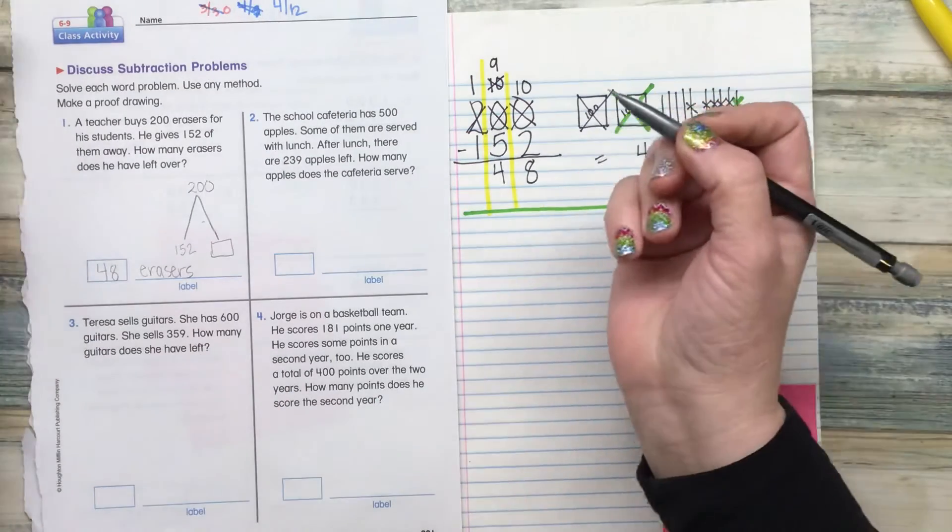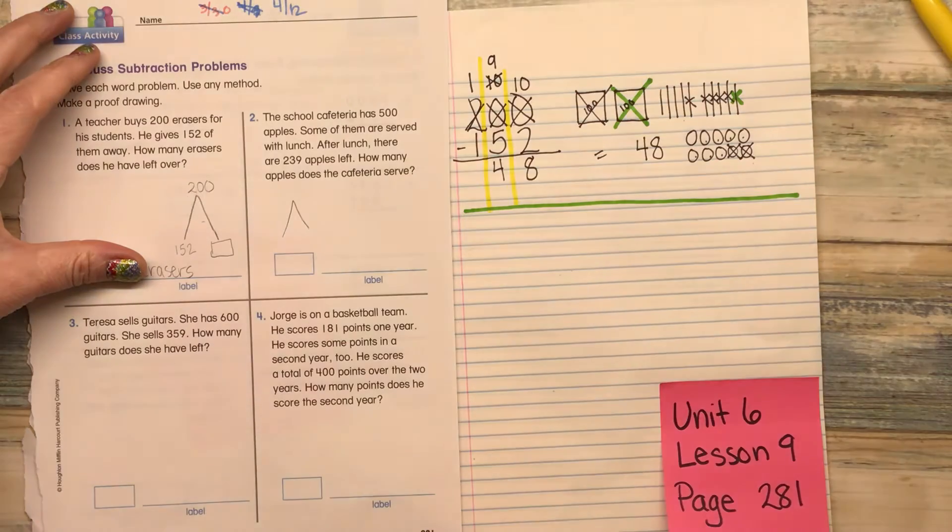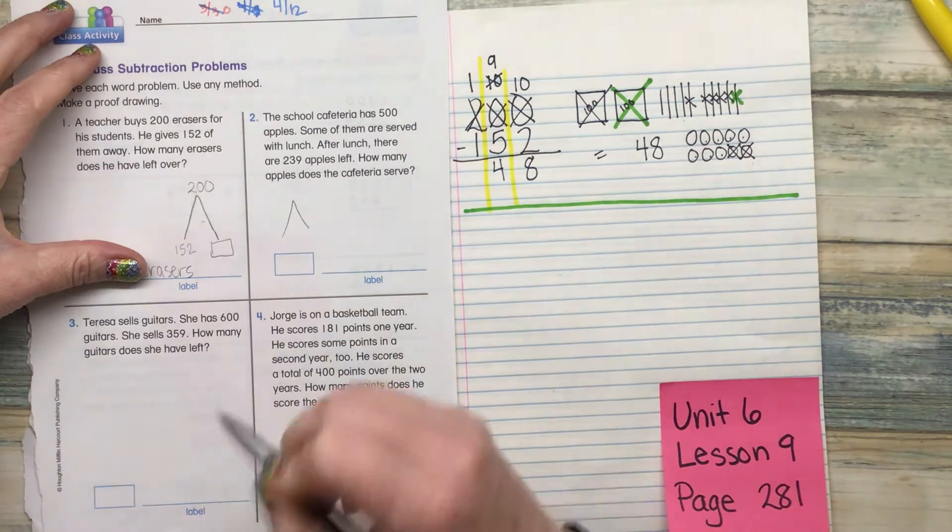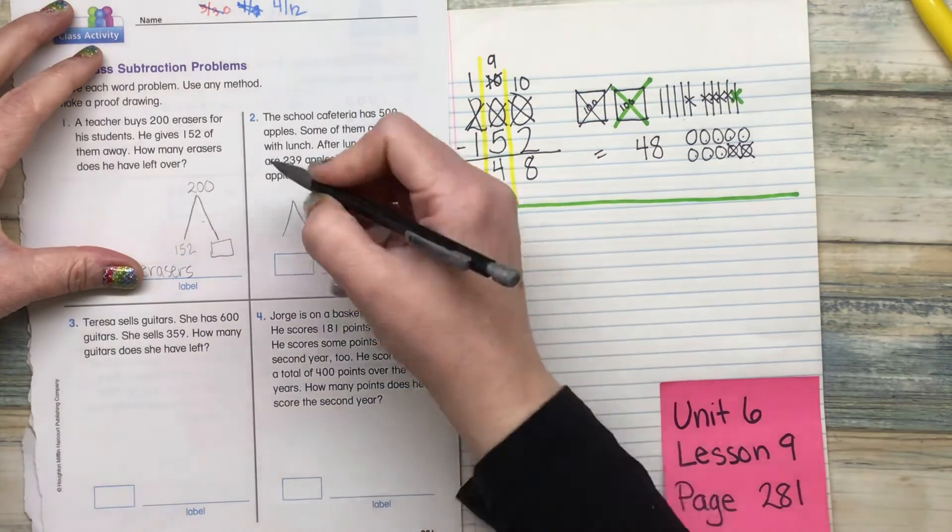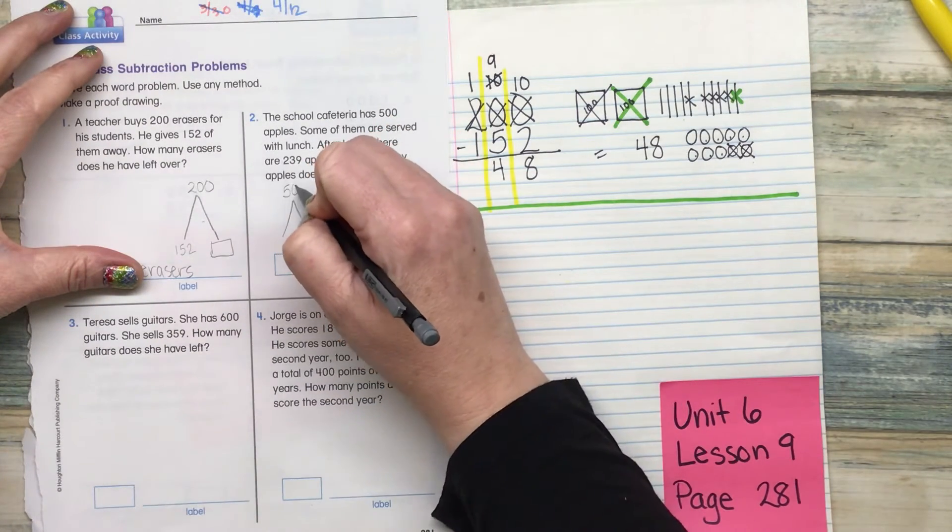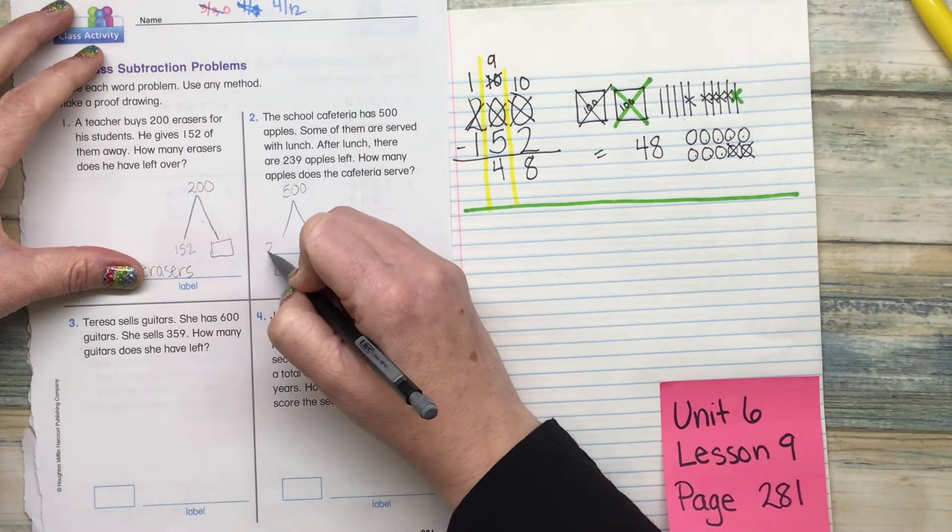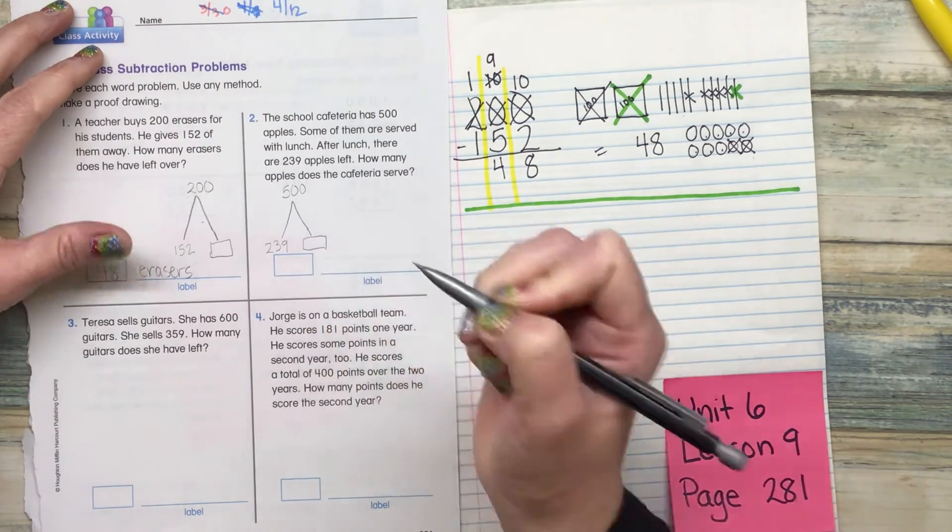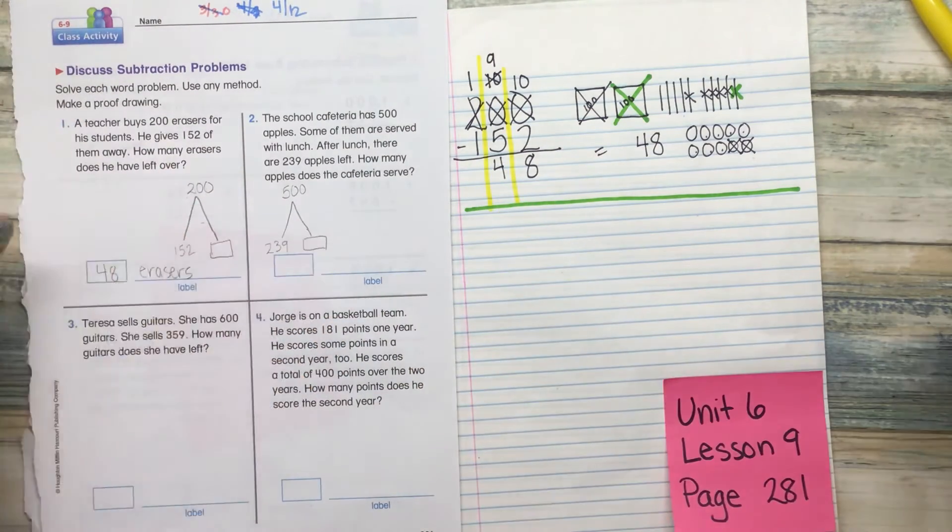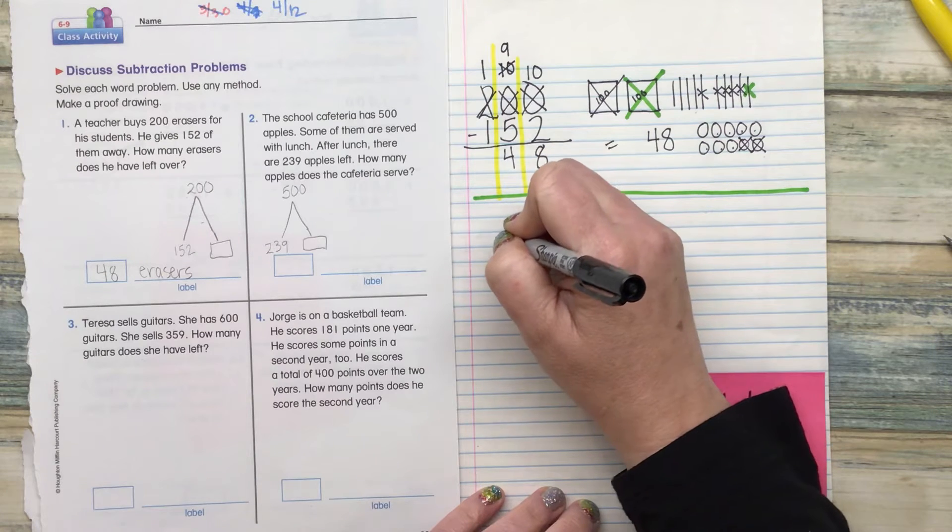The school cafeteria has 500 apples. Some of them are served with lunch. After lunch, there are 239 apples left. How many apples does the cafeteria serve? So I'll make my math mountain. I've got 500 apples I'm starting with, and then I have 239 left over. How many did we give away? So we need to figure out that partner there.